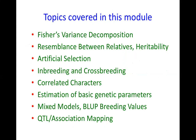The topics we're going to cover in detail are Fisher's variance decomposition, resemblance between relatives, the notion of heritability, artificial selection, inbreeding and crossbreeding, correlated characters, estimation of genetic parameters, mixed model and breeding value estimates, and QTL and association mapping for finding genes.